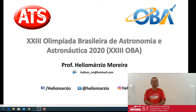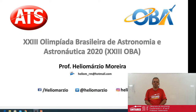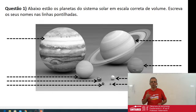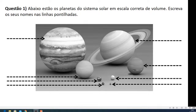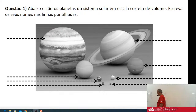Esse ano de 2020 é ano bissexto. Então, hoje nós vamos resolver questões da 19ª OBA, porque foi em 2016 que foi ano bissexto. Dos nossos slides de hoje, a gente vai começar a ver as resoluções. Vejam lá no cantinho direito o simulado OBA. No site da OBA, oba.org.br, nós temos sempre o simulado OBA. Você baixa para o seu celular e vai estudar as principais e melhores questões da OBA de todos os tempos.